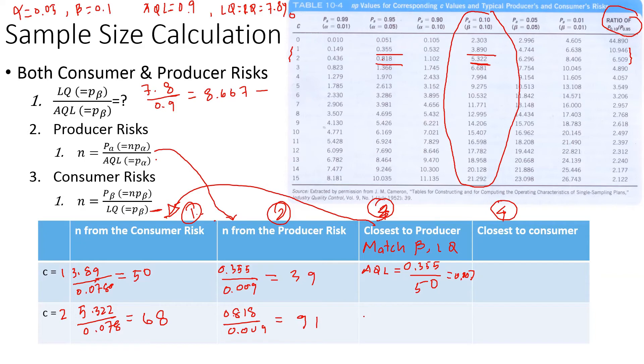That equals 0.007. For C value 2, we calculate AQL as 0.818 divided by 68, which equals 0.012. Now we see which is closest to the producer acceptable limit of 0.09. This one at 0.07 is closest, so using this criteria we choose n=50 with C=1.